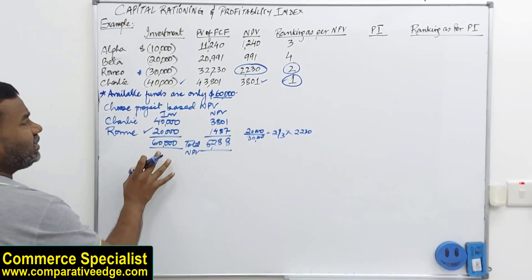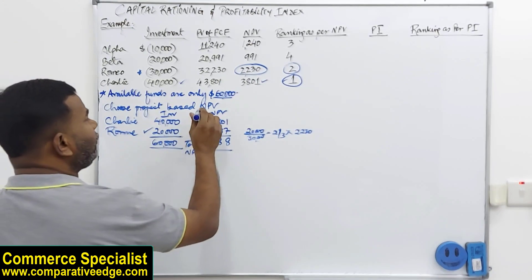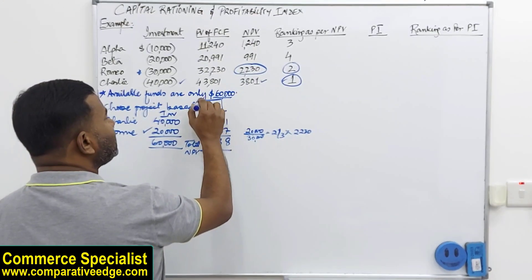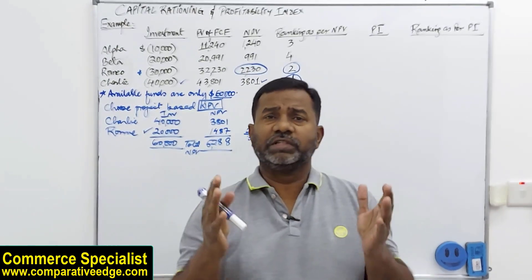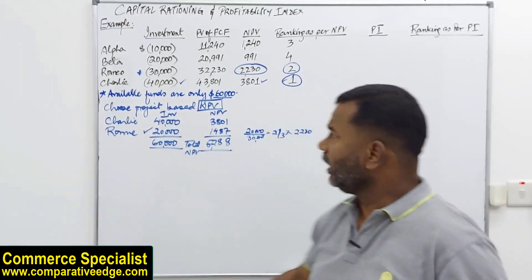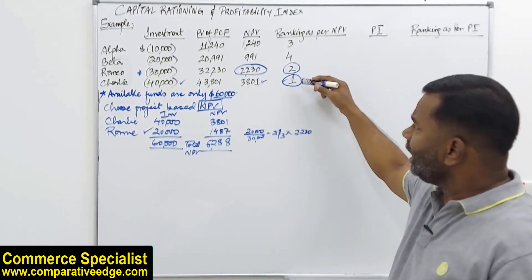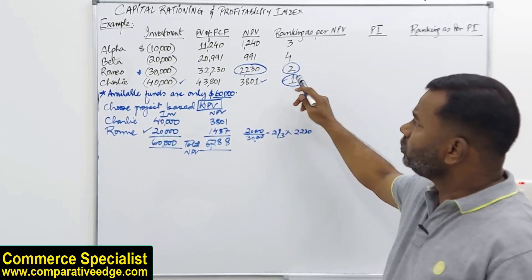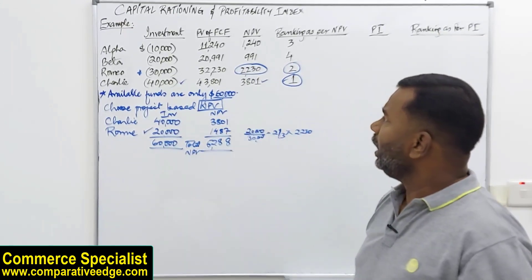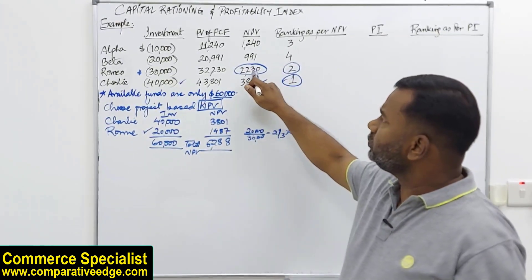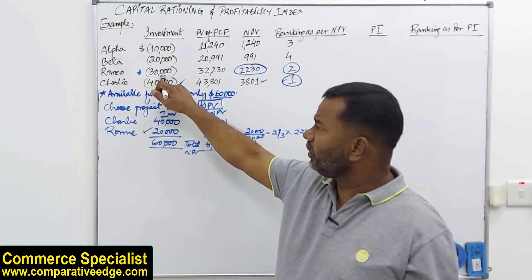But this decision has been taken if we have considered NPV as the criteria. So what I have done: I have only 60,000 to invest. I ranked my investment opportunities as per the highest NPV. So highest NPV is this, it requires 40,000. I took this. I got full NPV.